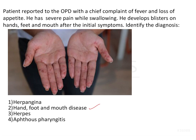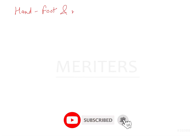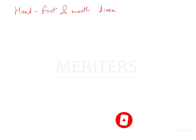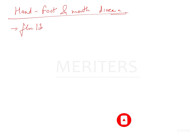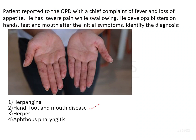The answer is Hand, Foot, and Mouth Disease. The symptoms of this disease include herpangina, skin rash, and oral lesions, typically associated with flu-like symptoms such as sore throat, dysphagia, and fever. The patient here has dysphagia, fever, loss of appetite, and develops blisters on hand, feet, and mouth — this is the typical clinical presentation.